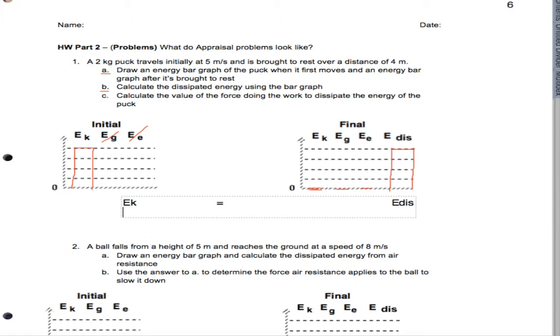And only then do I try to plug in formulas. So I know the formula for kinetic energy is one-half times M times V squared. And what I can do then is set that equal to the dissipated energy.